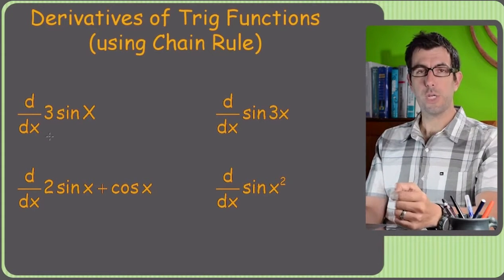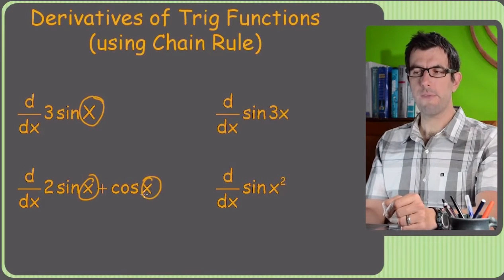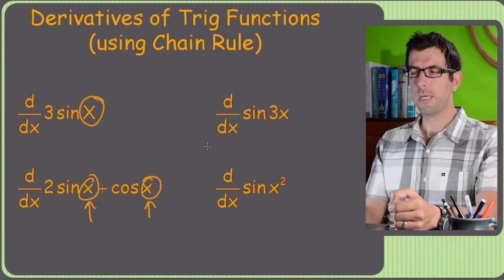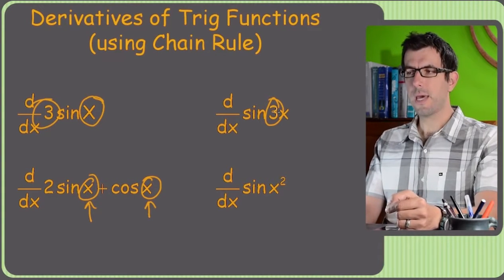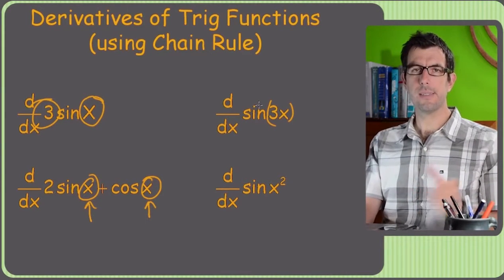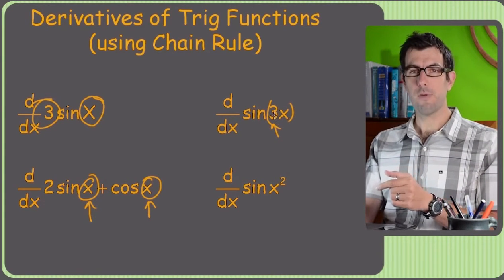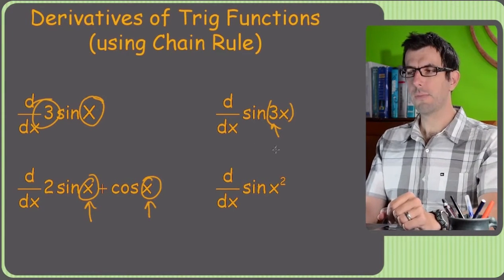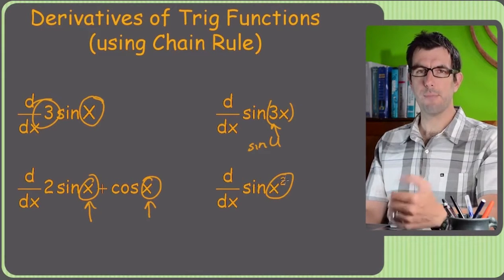The main thing you're looking for when you need the chain rule on a trig function is something other than x. For sine of x, cosine of x — that letter could only be a single letter all by itself without a number in front in order to be a non-chain rule situation. Sine of 3x requires chain rule because that 3 is in there with the x, inside the argument of the function. Same thing with sine of x squared — that exponent requires chain rule, making u equal to x squared.